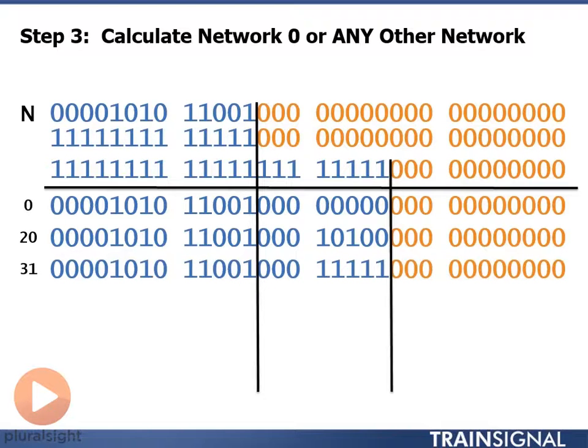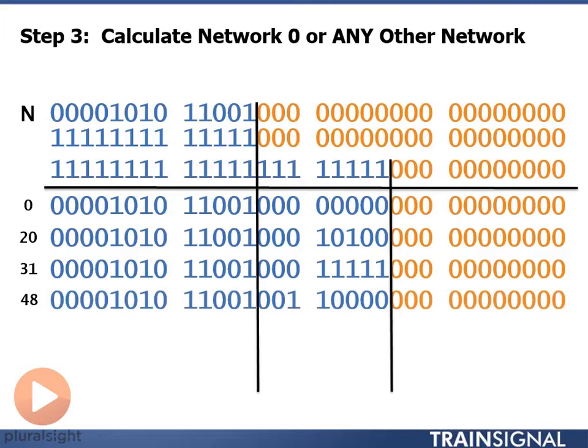Two more networks we need, network number 48. So 48 in binary is 0011000. Put all zeros in my host portion. That tells me my network address.